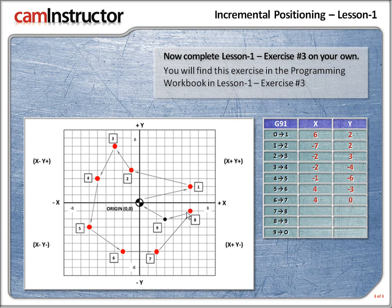Next up, 7 up to position 8. The x — we're moving to the right, and it's going to be a positive amount. How many squares? 1, 2, 3, 4. So x is plus 4. What about the y? We're moving up, that's going to be a positive amount: 1, 2, 3, 4, 5. So from 7 to 8, x is plus 4 and y is plus 5.